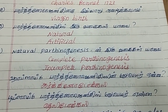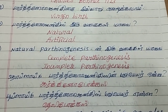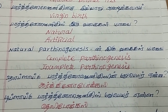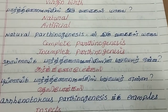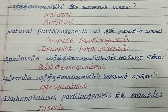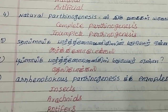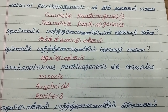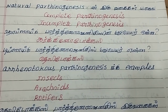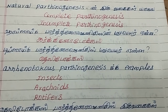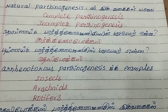Parthenogenesis is under the word 'Them.' Complete Parthenogenesis and incomplete Parthenogenesis. Haploid Parthenogenesis is a matter of Arrhenotochus pathogenesis. Aploid Parthenogenesis is a matter of Thelytochus pathogenesis.